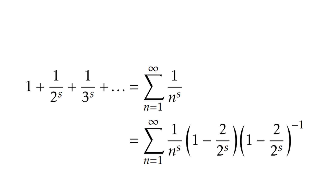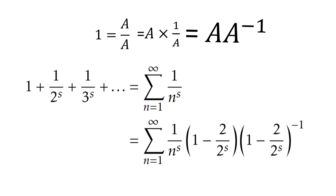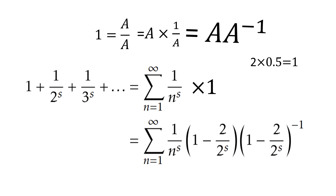Let's begin unfolding the Riemann zeta function. We keep the last function in the center of the page and modify it to derive a different function, using a simple fact: 1 equals a divided by a, meaning any number divided by itself equals one. We can also write it as a multiplied by its inverse equals one — for example, 2 times one half equals one. So we multiply the Riemann zeta function by 1 minus 2 divided by 2 to the power s, and its inverse, to unfold and expand the zeta function.